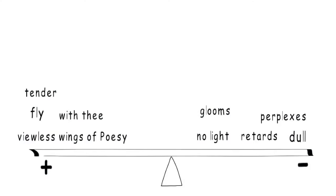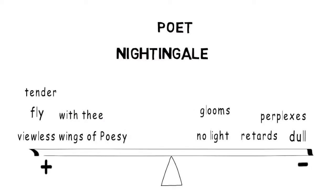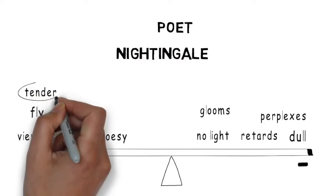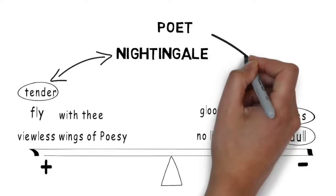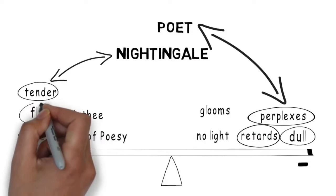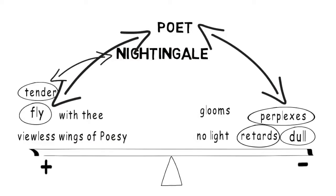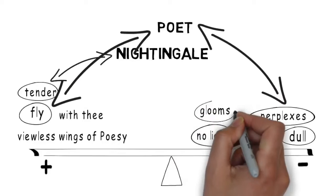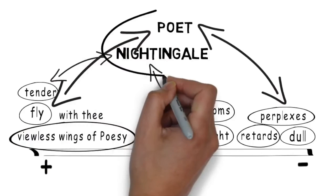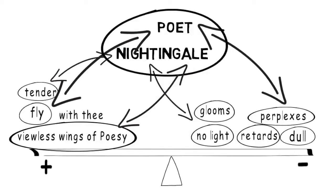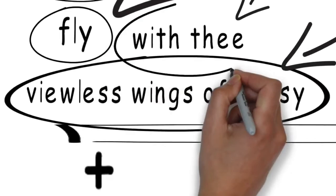In this stanza, the positive and negative aspects don't correspond quite so neatly with the poet and the nightingale. Some of it is what we might expect — 'tender' connecting with the nightingale and 'the dull brain that perplexes and retards' connecting with the poet. But the poet will fly to the nightingale, so a positive quality gets connected to the poet, and the world of the nightingale is a world of no light, a world of glooms. The central image of this stanza is perhaps the viewless wings of poesy, which unites the poet and the nightingale — through poetry, the poet can enter the world of the nightingale.